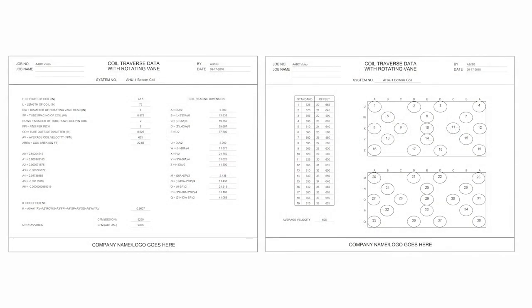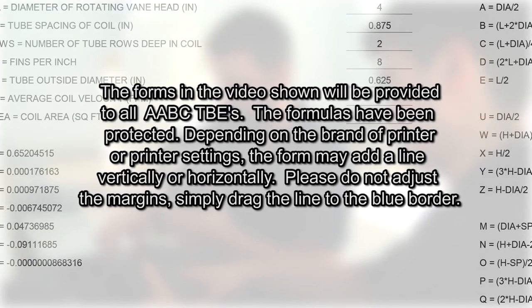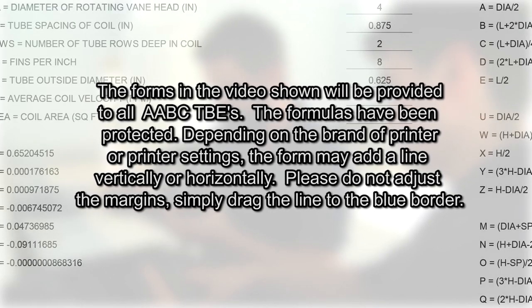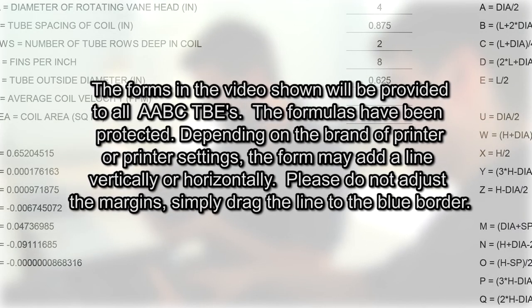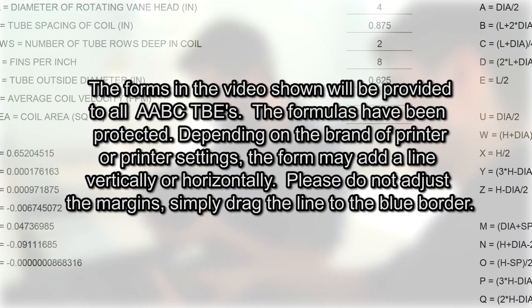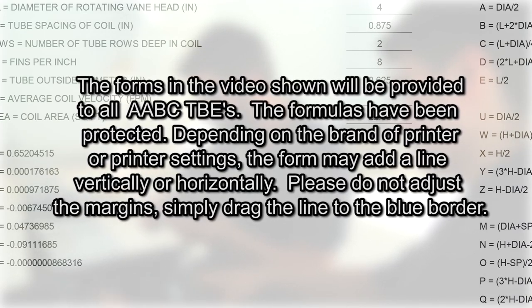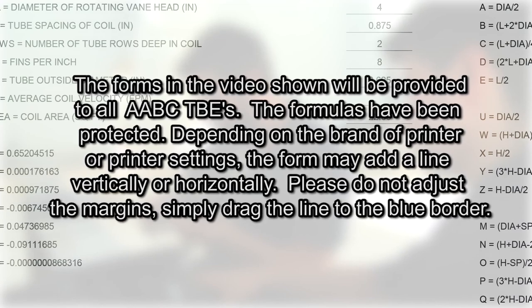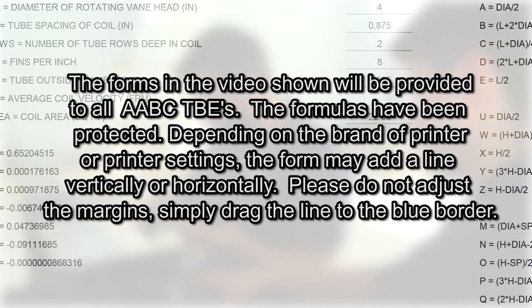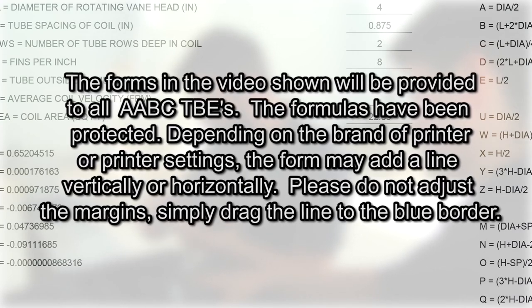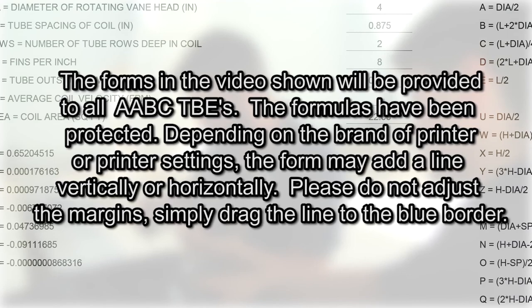This completes the process using the coil traverse data with rotating vane form. Thank you. The forms and the video shown will be provided to all AABC-TBEs. The formulas have been protected. Depending on the brand of printer or printer settings, the form may add a line vertically or horizontally. Please do not adjust the margins.